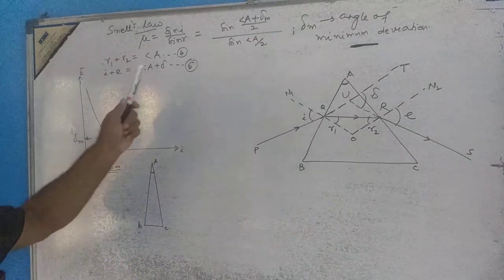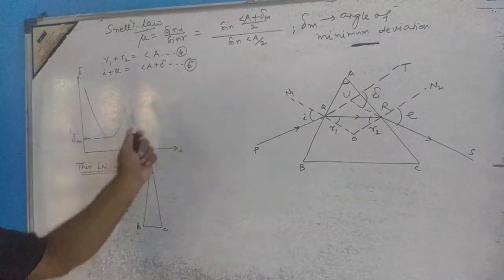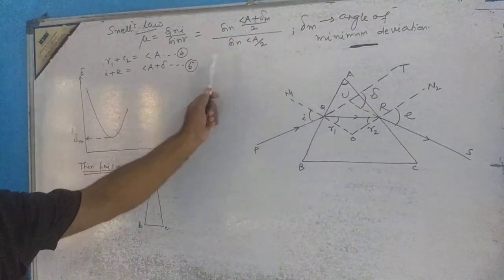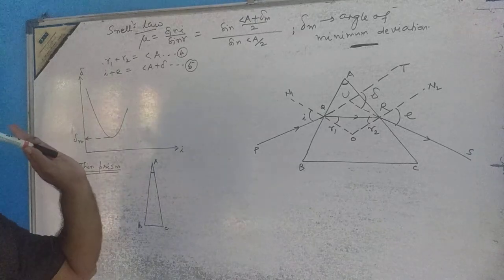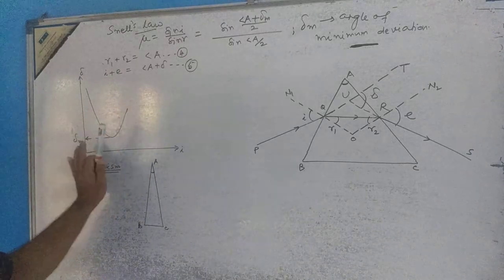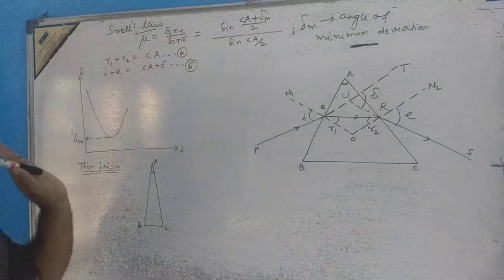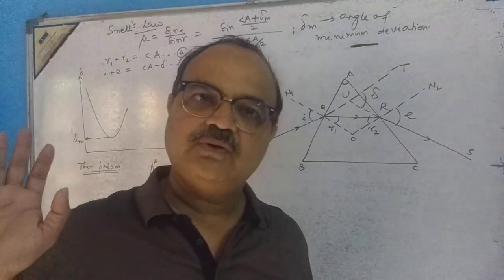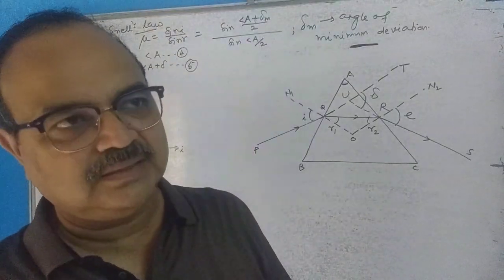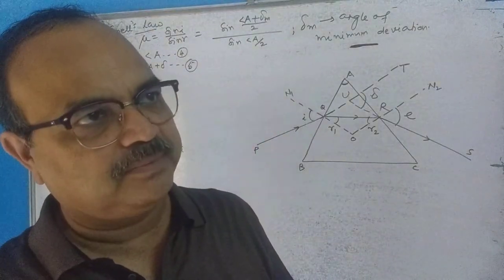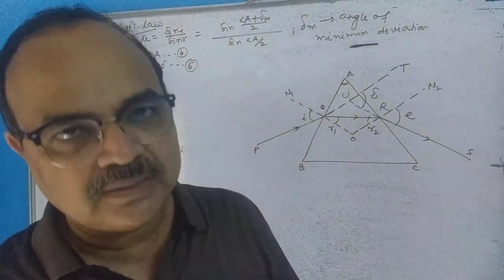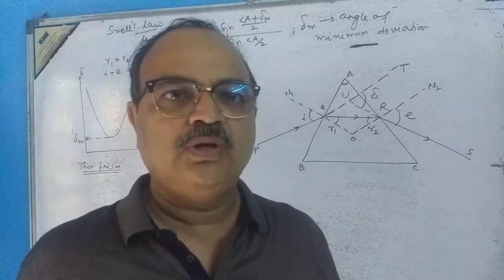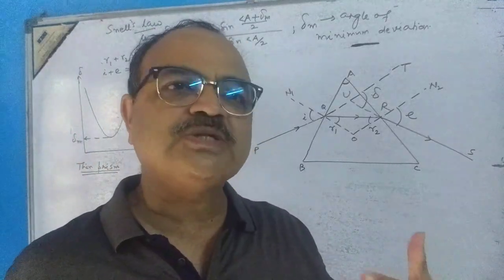This graph is related to the prism formula. From the graph only, we can determine the angle of minimum deviation. Now we are coming to a special case regarding a thin prism.